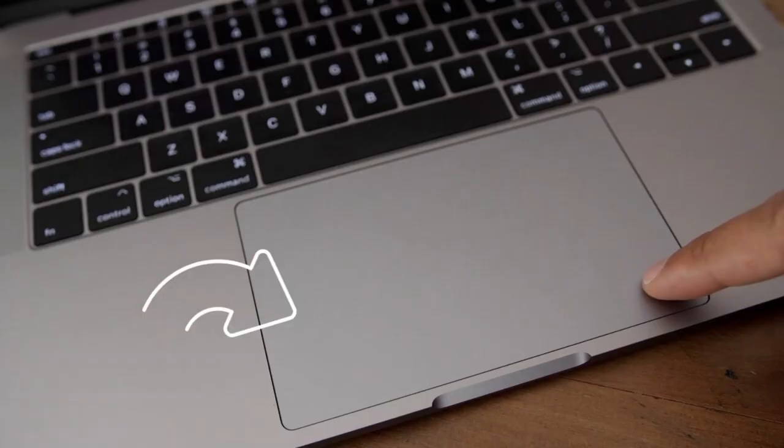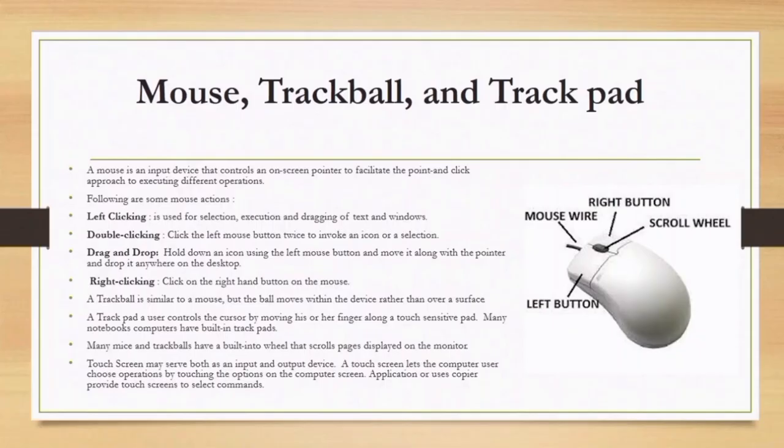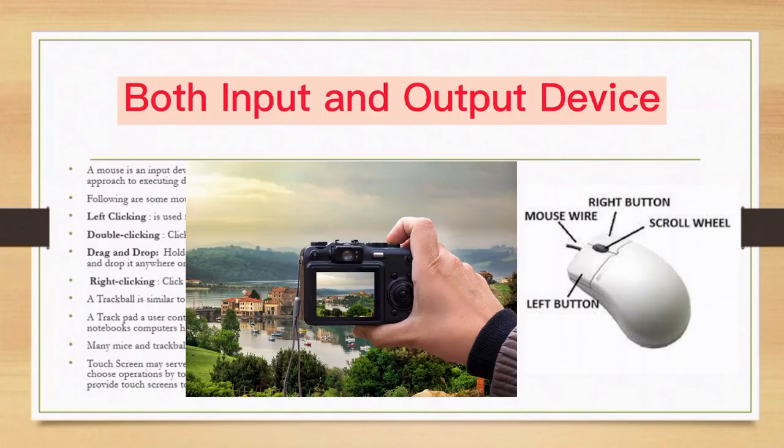A trackpad, like the one found on a laptop, allows a user to control the cursor by moving a finger along a touch-sensitive pad. A touch screen, like the one on your phone, may serve both as an input and output device. There is another category I didn't mention: devices that are both input and output.